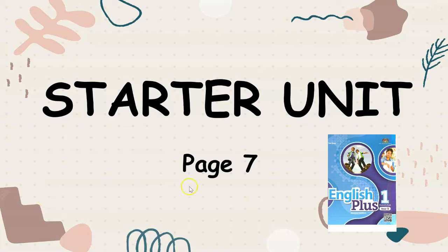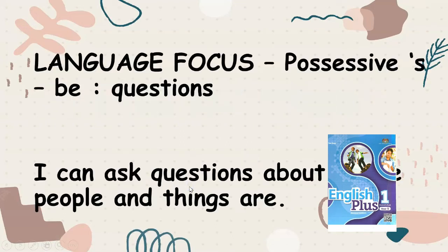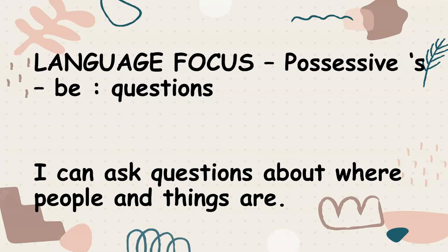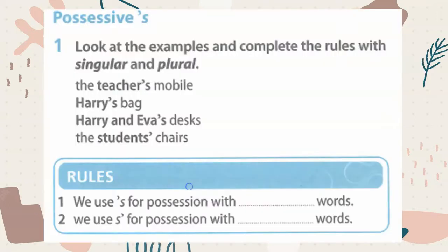Starter Unit, Page 7, Language Focus Possessive B. Questions — I can ask questions about where people and things are. Possessive — look at the examples and complete the rules.